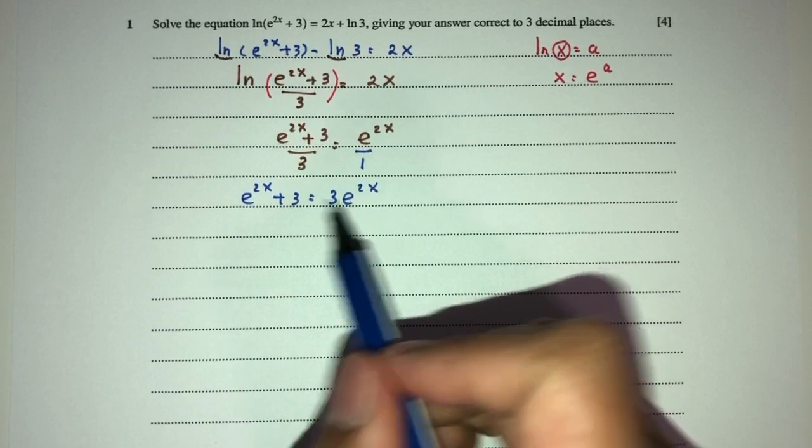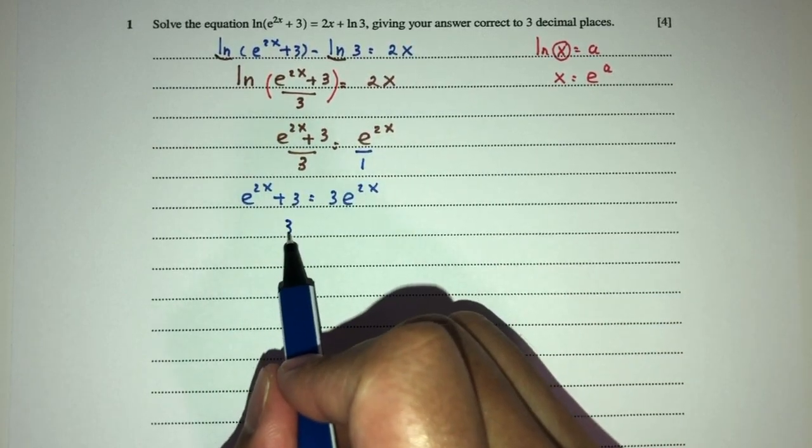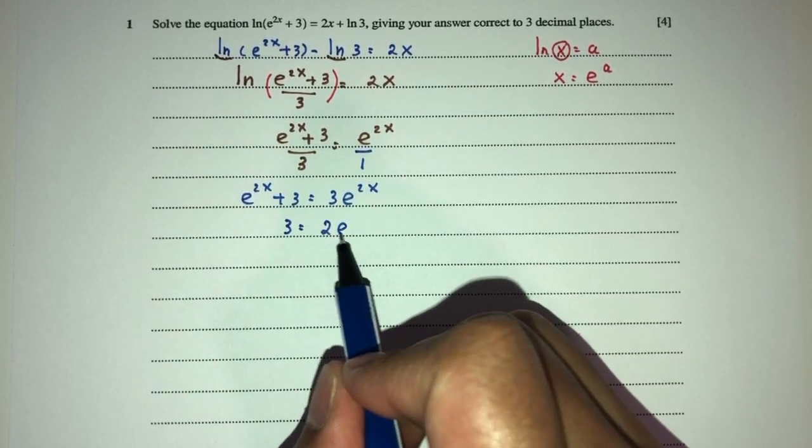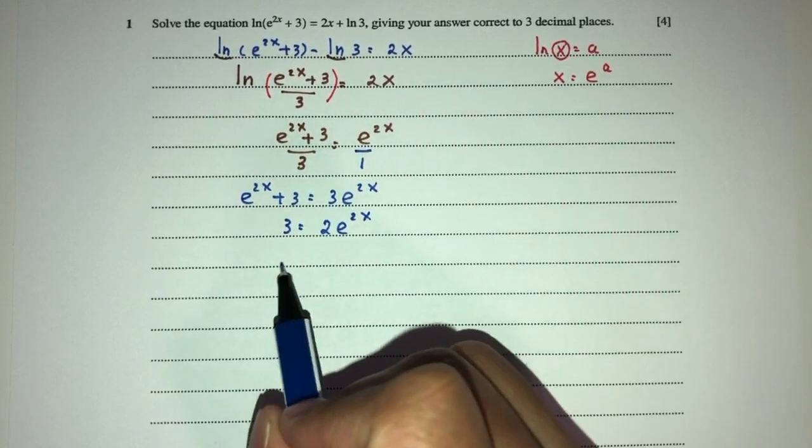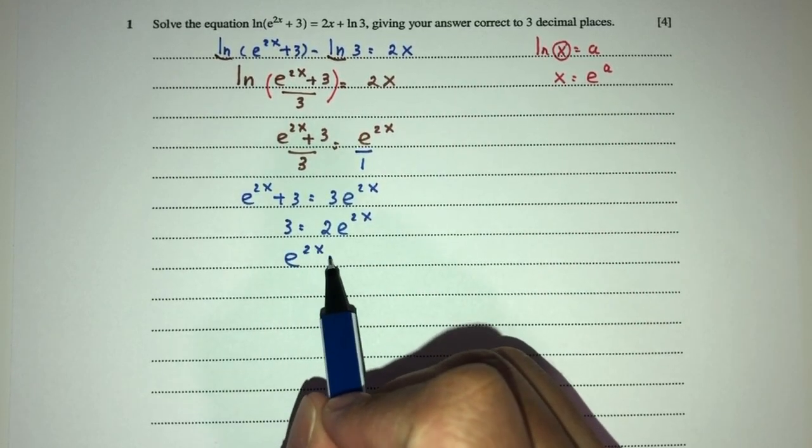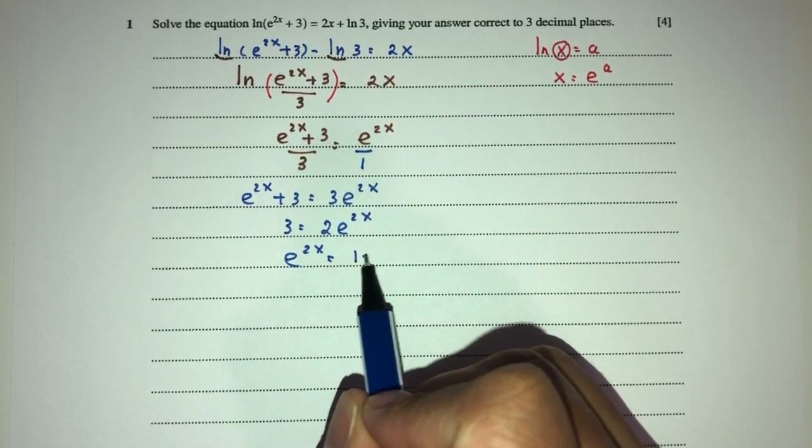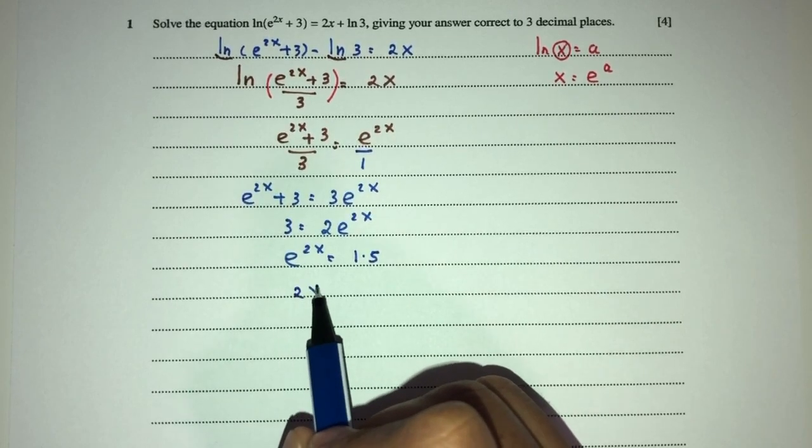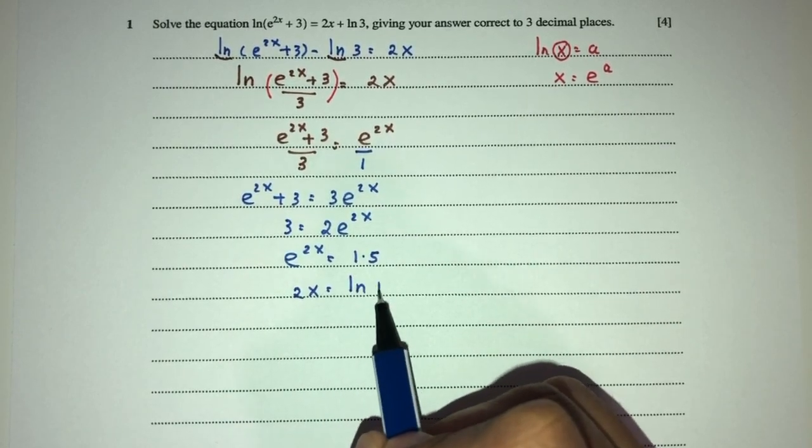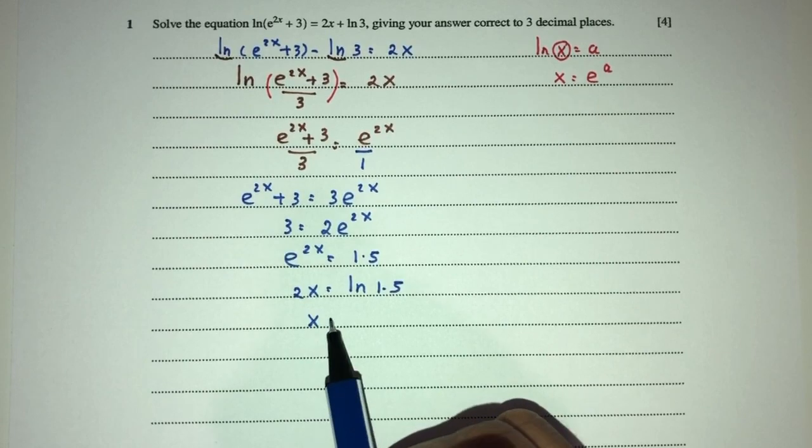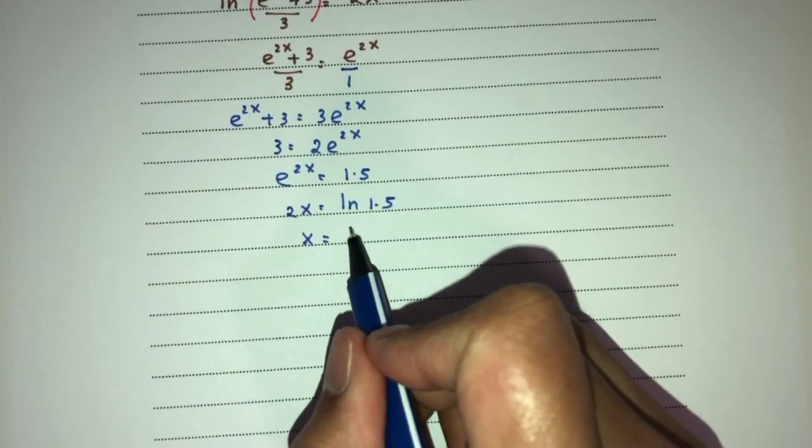Now simplify. We can send this one over here. You will have 3 here. That will become 2 exponential 2x. Exponential 2x is the value of 3 over 2, which is 1.5. Now 2x has to be ln of 1.5, so finally x has to be half of this one.